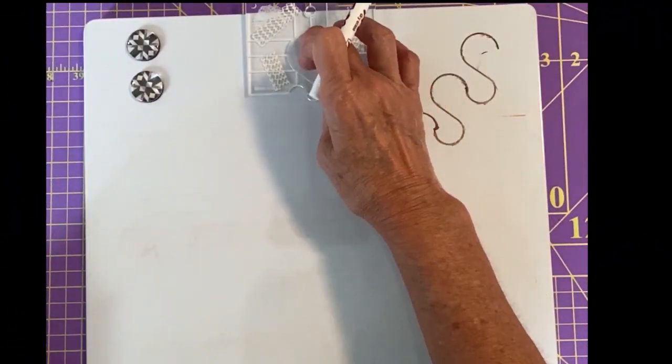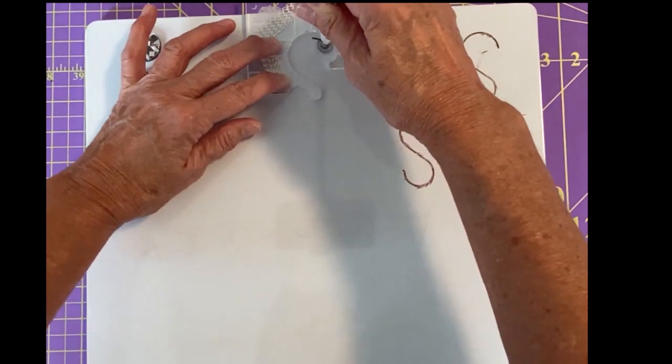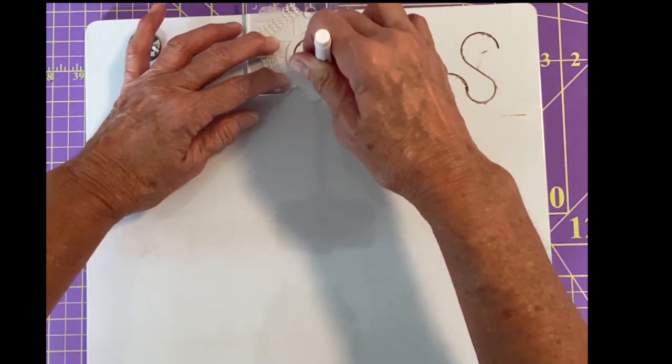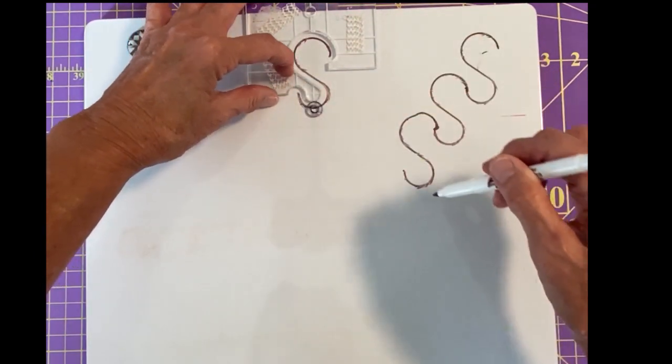Instead of starting in the hook you start at the marking line in the center there. So I'm going to start there and I'm going to come down to the hook and then back around and over. I'm not going to stop at the hook instead I'm going to come back down to that center point there.